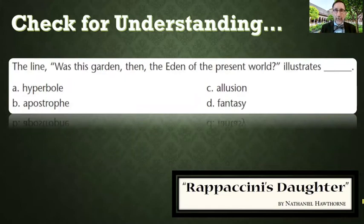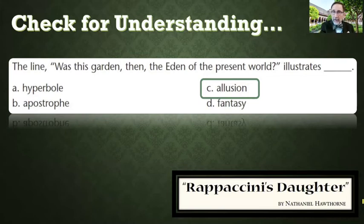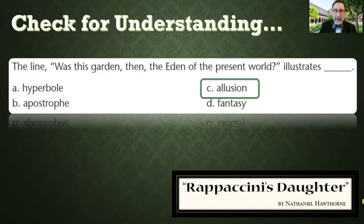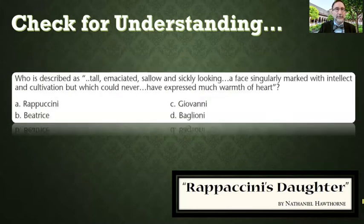There's a line at the end of the story: 'Was this garden then the Eden of the present world?' — and that illustrates the concept of allusion. From the Judeo-Christian tradition, there was the garden of Eden where Adam and Eve had everything they wanted; the world was perfect, they were just told don't do this one thing, and evil sneaks in and convinces them to do something different and they ruin everything. This is also a common theme in mythology — the Greek legend of Pandora's box: everything was perfect in the world, and Pandora was given a box and told never to open it, but her curiosity got the best of her and all of the evils now in the world escaped.